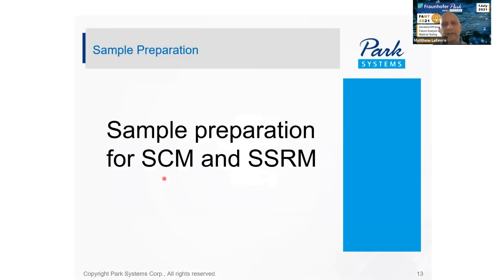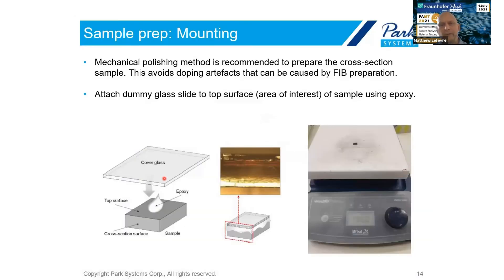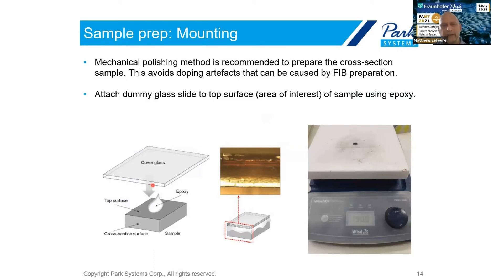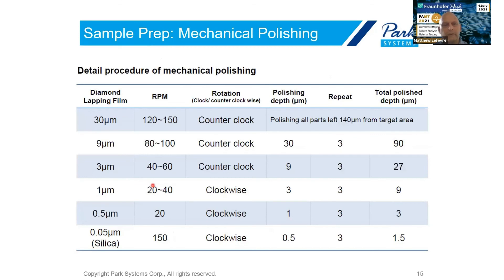The last thing I would like to mention is that in order to get good images for either technique, sample preparation is absolutely critical. Typically we're looking at cross sections to look at devices. Traditionally, people have just used a glass cover slide or something like that to make sure that when we're doing mechanical polishing afterwards we don't get any edge effects. Typically we look at mechanical polishing, where we start with very coarse diamond to remove the material and then finish with something like colloidal silica to get a fine mirror polish, because if there are any scratches, we're definitely going to affect image quality.